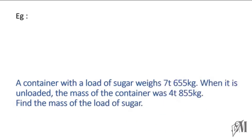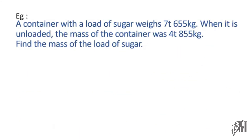Moving on to a subtraction question: a container loaded with sugar weighs 7 tons and 655 kilograms. When it is unloaded, the mass of the container was 4 tons and 855 kilograms. Now we have to find the mass of the sugar. With sugar it is 7 tons and 655 kilograms; without sugar it is 4 tons and 855 kilograms. So to find the mass of the sugar we have to subtract 4 tons and 855 kilograms from the total load.